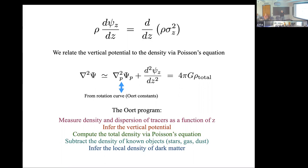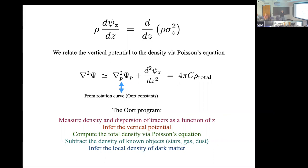This has become known as the Oort program: measure the density and dispersion of tracers as a function of Z, infer the vertical potential, compute the total density via Poisson's equation, and then subtract the density of known objects to infer the local dark matter density. My collaborators Susan Gardner, Brian Yanny, Scott Dodelson, and I were attempting to do this with SEGUE data.